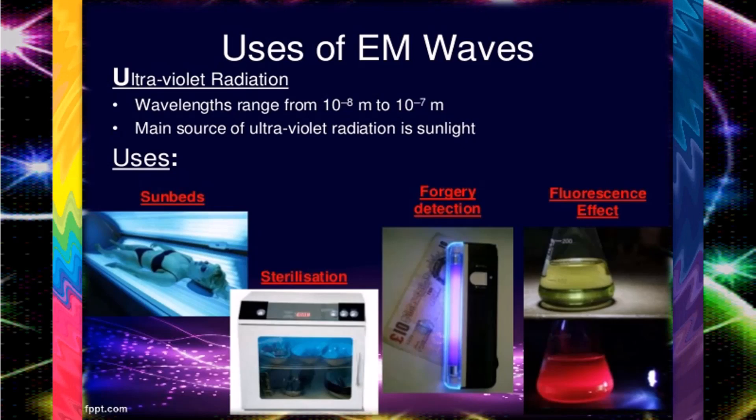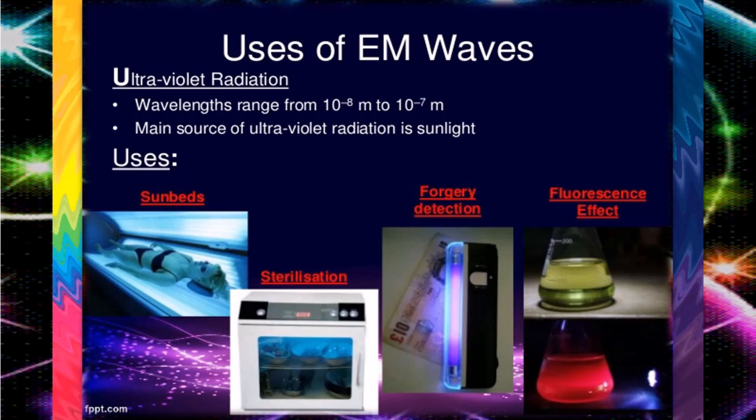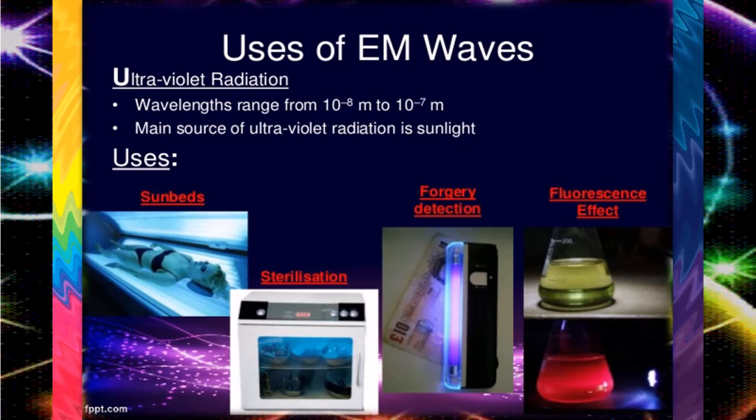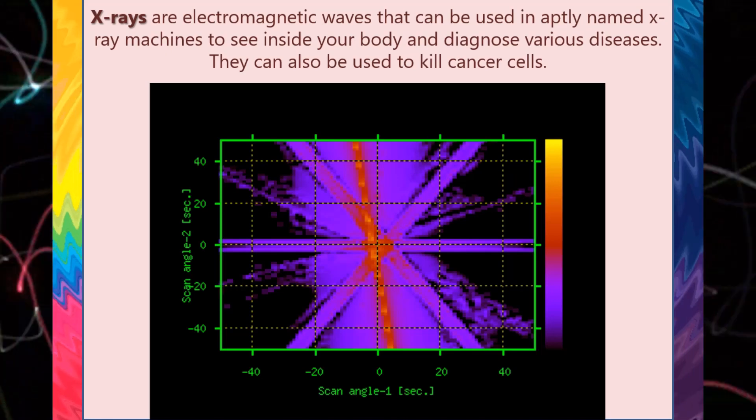UV also lights up fluorescent materials. Highlighter pens are brighter and more useful because of this effect. This property can be used to check if money is real or counterfeit by hiding things in it that light up under UV.